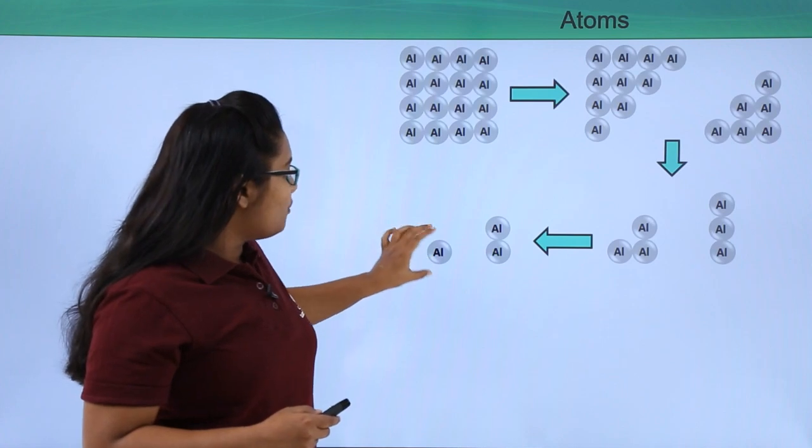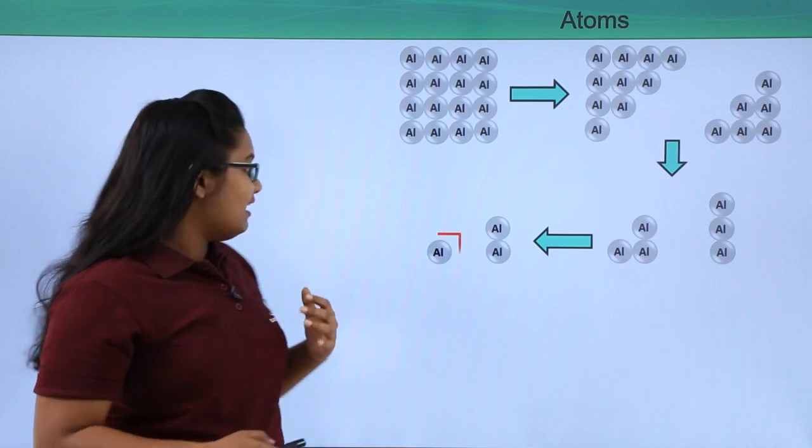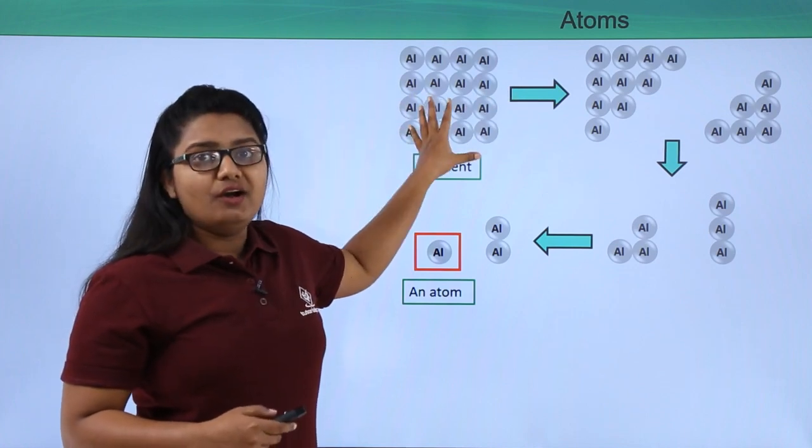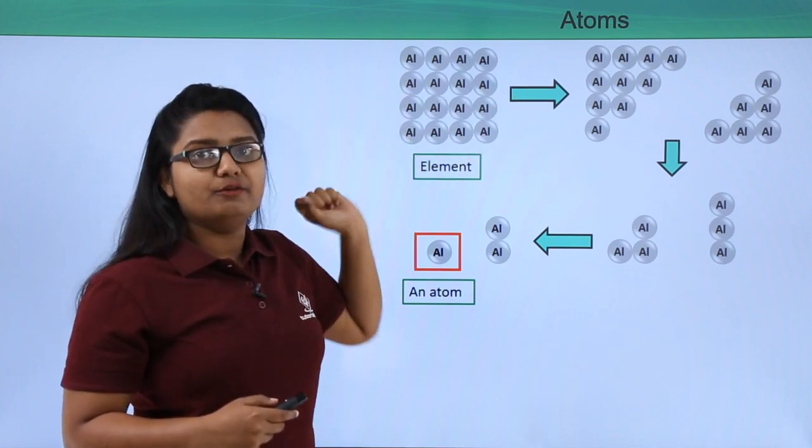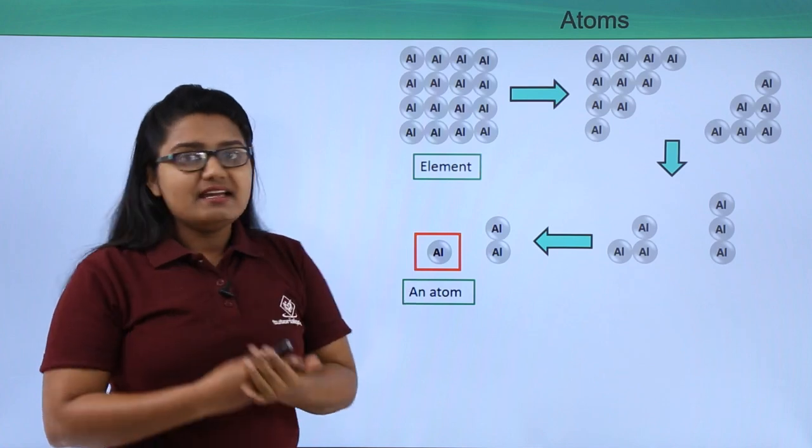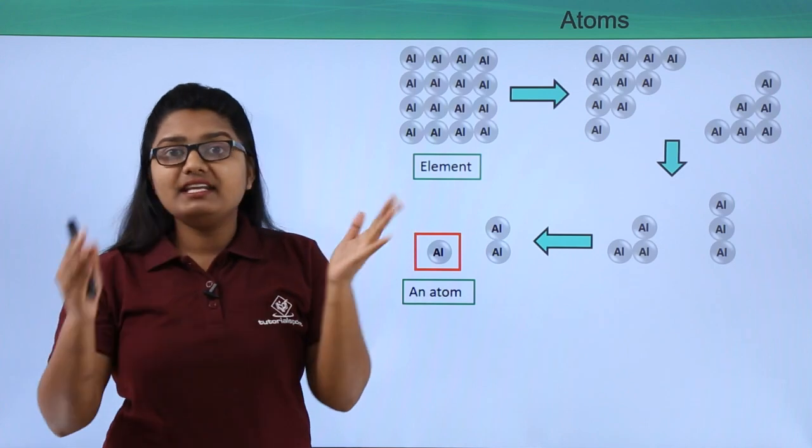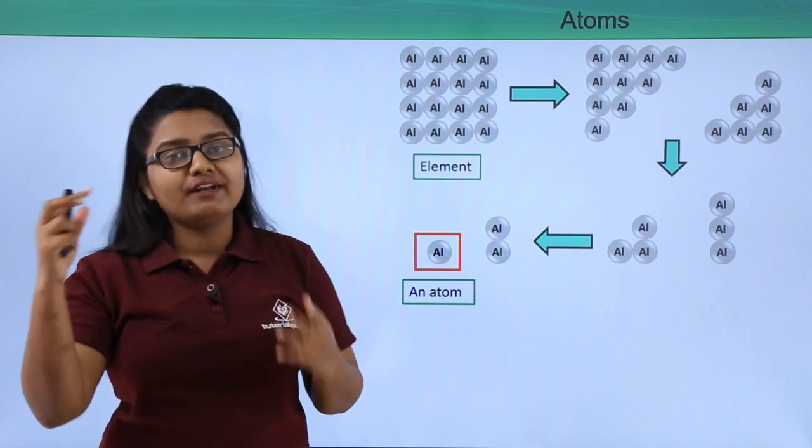This smallest thing we call an atom of aluminum, and the bunch of atoms that we had before is called an element of aluminum. We can say that an element of aluminum has all the atoms which are aluminum atoms and not any foreign atom.